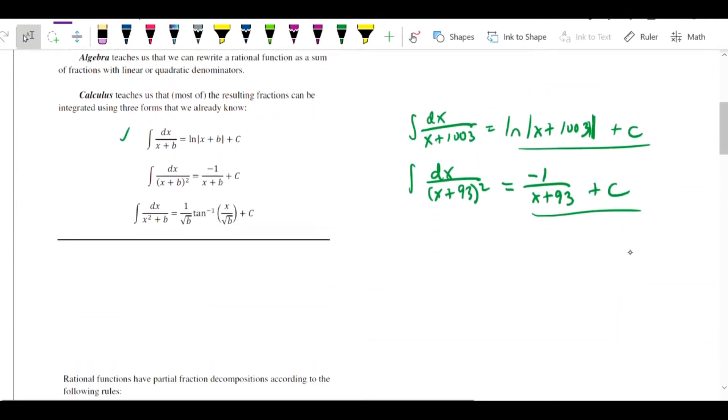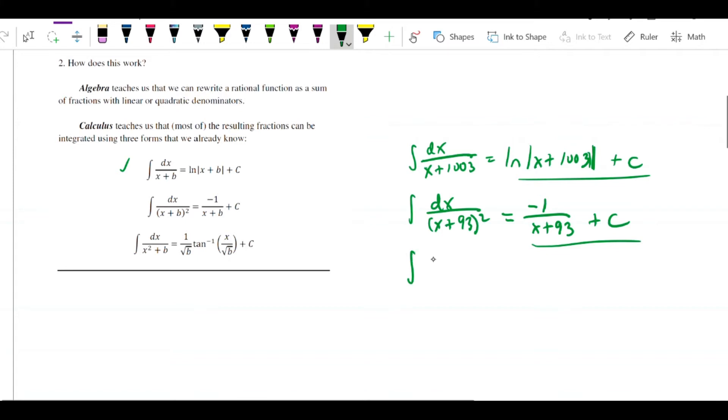With a little more work, we could discover that the antiderivative of x squared plus 9 is equal to 1 over 3 arc tangent of x over 3 plus c.